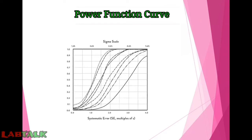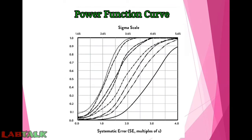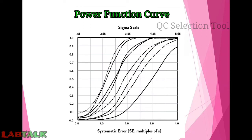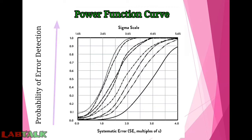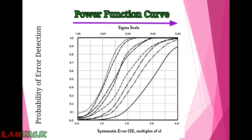Now we will see how power function curves are used for QC planning and to determine the frequency of QC runs, including error detection and probability of false rejection. Power function curves are QC selection tools where the probability of error detection is on the y-axis, the size of systematic error is on the lower x-axis, and the sigma quality is on the upper x-axis.